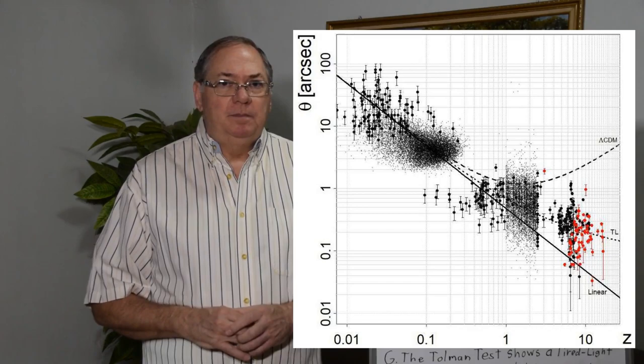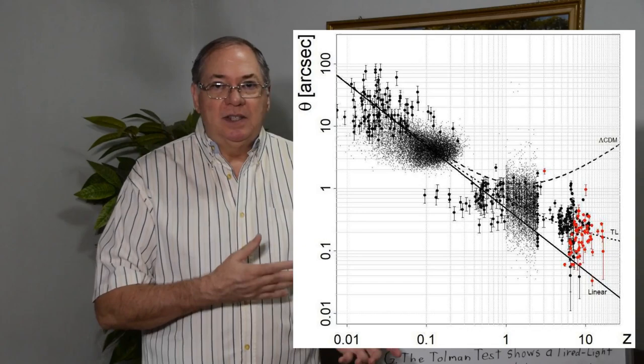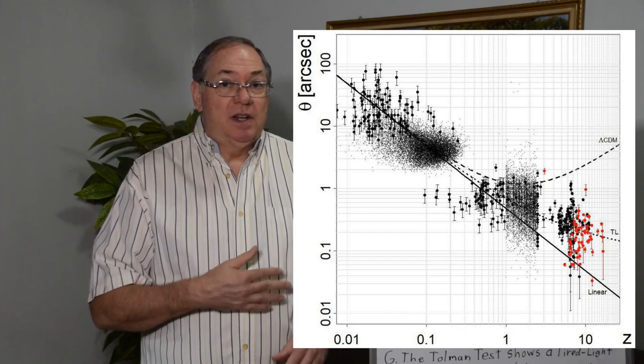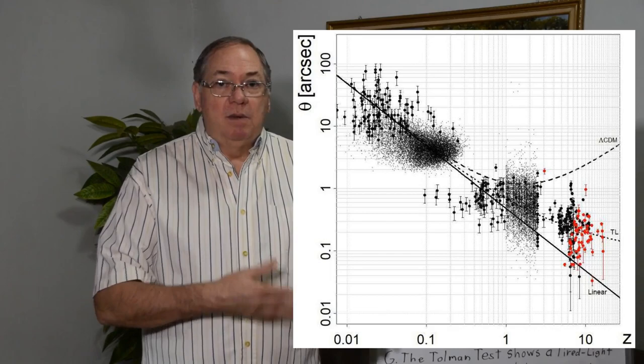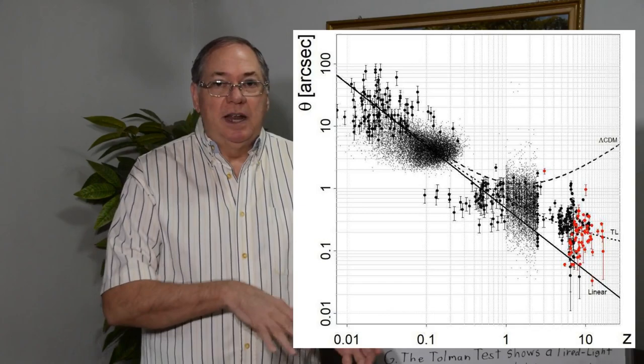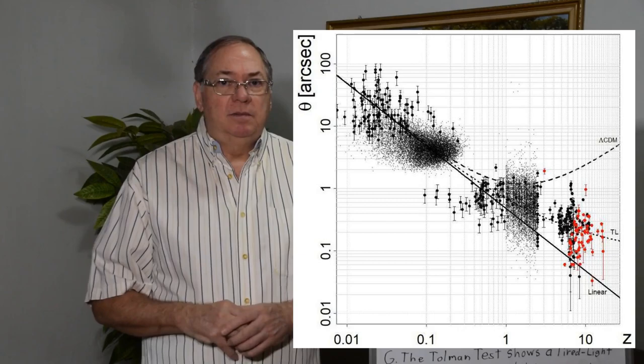It doesn't follow the Lambda CDM model where these galaxies have to get bigger. And also based on their data, it doesn't follow the strictly linear model. There is some curvature to it due to some compounding effect that causes an exponential curve, although a fairly slow exponential curve.